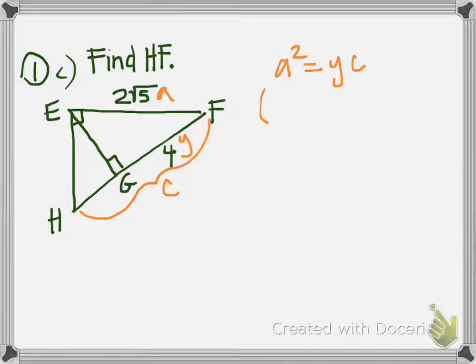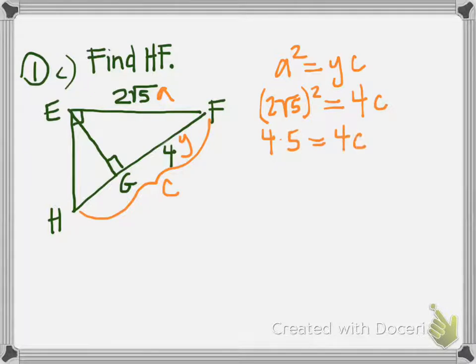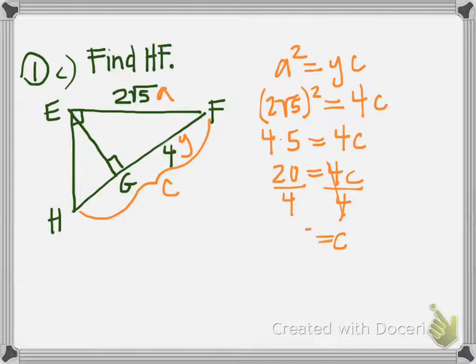We'll plug in what we know and solve for c. a is 2√5, so we square that — make sure to put it in parentheses. That equals y, which is 4, times c. To square 2√5, we square the 2 and the √5 separately: 2² = 4, and √5² = 5. Multiplying gives 20 = 4c. Since both sides are multiplied by 4, we divide both sides by 4 to find that c = 5.